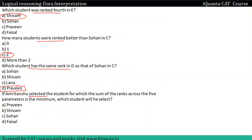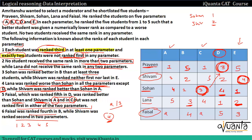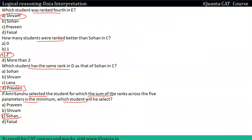Question: If Amrit Tanshu selected the student whose sum of ranks across the five parameters is minimum — we calculate totals for each student. After summing: Praveen gets 16, Sohan gets 13, and others get higher totals. The minimum sum is 13, which belongs to Sohan. So the answer is Sohan, option C.